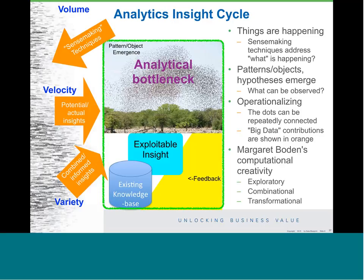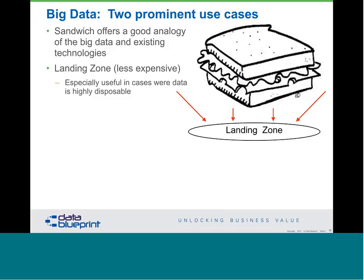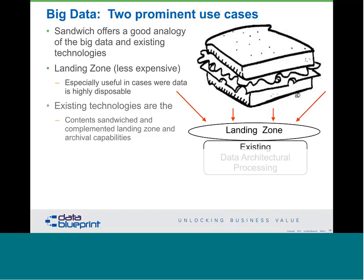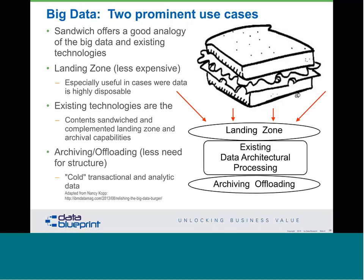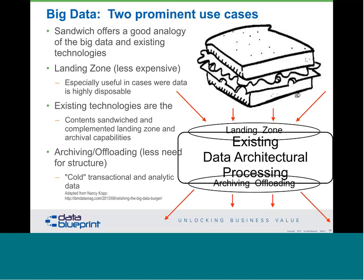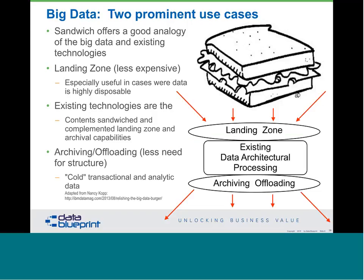This leads to two easy-to-understand use cases for big data techniques — the sandwich analogy. We have a landing zone where we bring in data, which many organizations call a data lake where the data is not yet well understood or ready to be processed. In the middle are our standard architectural processing capabilities. The other use case is offloading — needing less structure for cold transactional and analytical data. The landing zone and archival zone are great places to put big data techniques, but the middle part, as Gartner has said, is absolutely required.